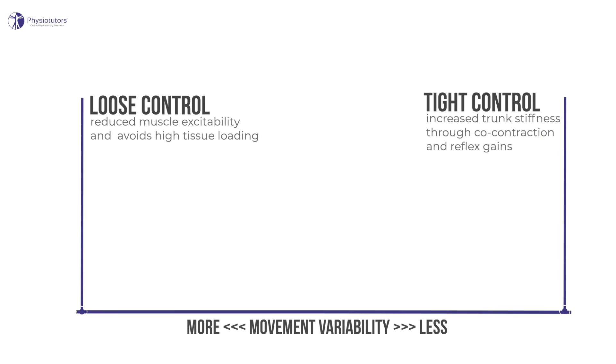In low back pain there seem to be two distinct phenotypes at both ends of the spectrum: a tight control pattern with excessive co-contraction and a loose control type with muscle inhibition.